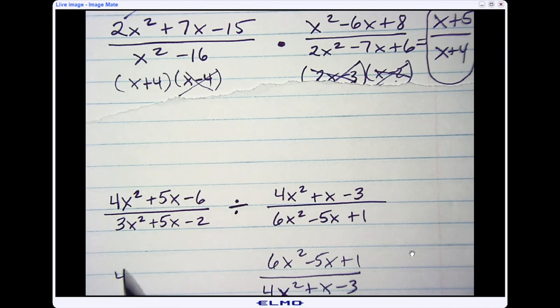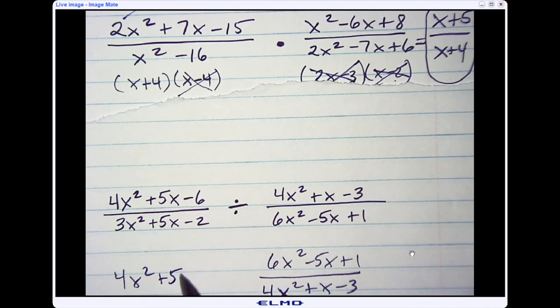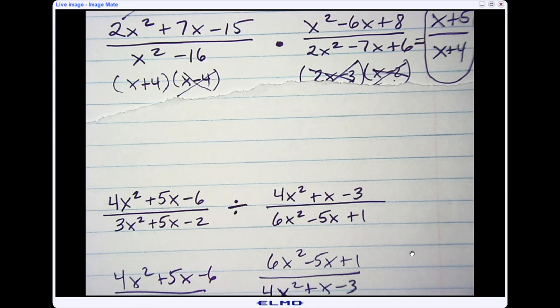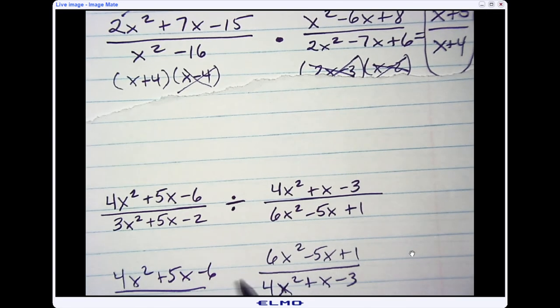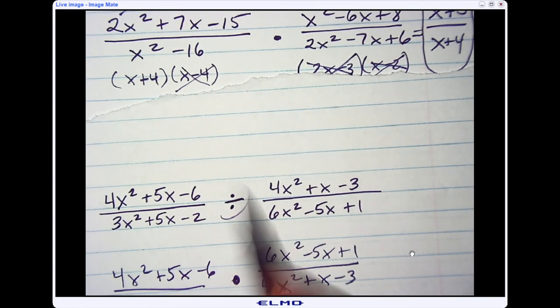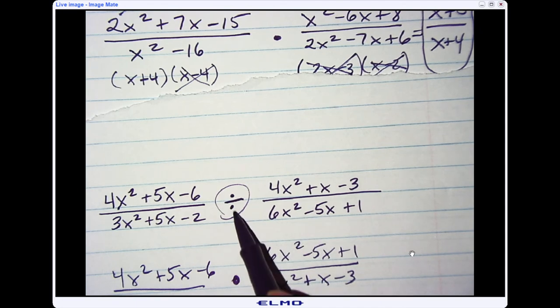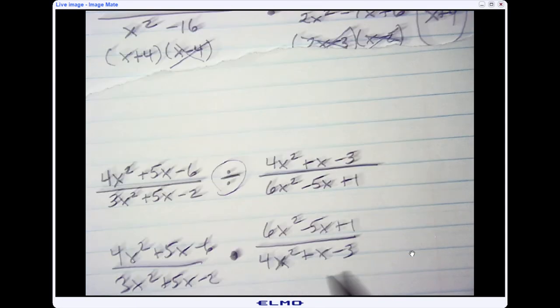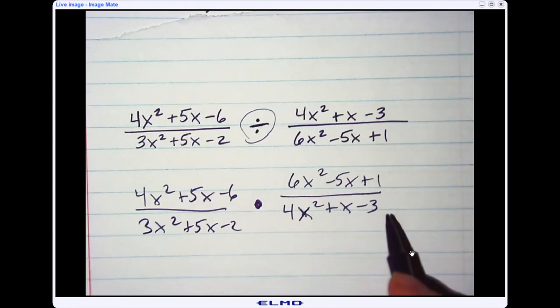And then I'm going to do the same. I'm just going to rewrite this first fraction as it is. And now I'm going to go ahead and do what I just did. Again, after you do the reciprocal, you change it from division to multiplication. I'm going to go ahead and factor these four.